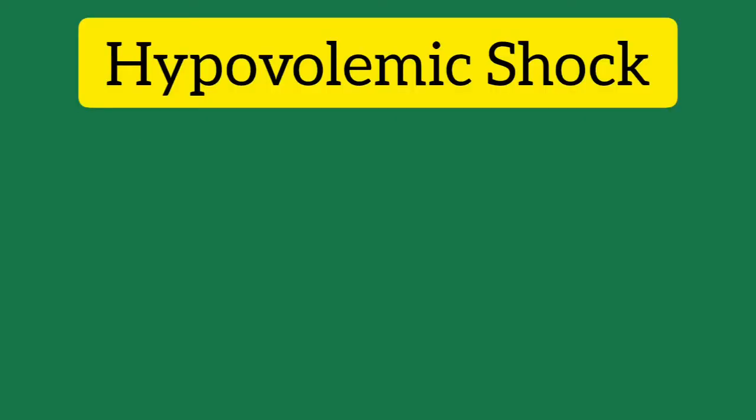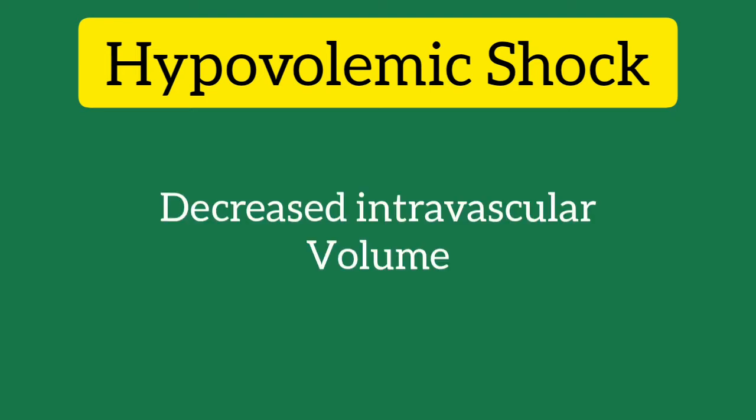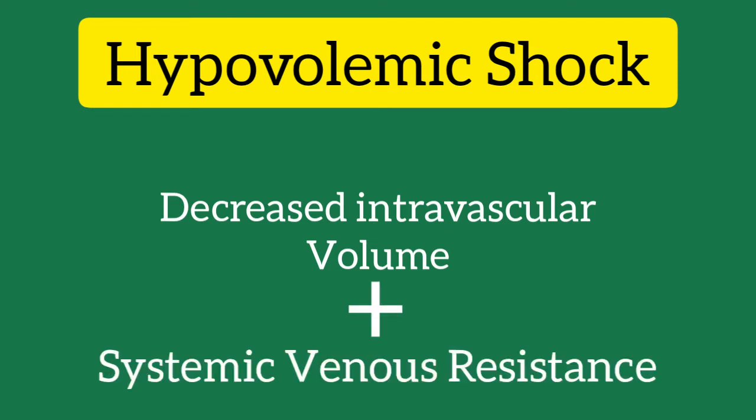Hypovolemic shock is characterized by decreased intravascular volume and increased systemic venous resistance, which is a compensatory mechanism to maintain perfusion in the early stages of shock. In the later stages, due to progressive volume depletion, cardiac output also decreases and manifests as hypotension.